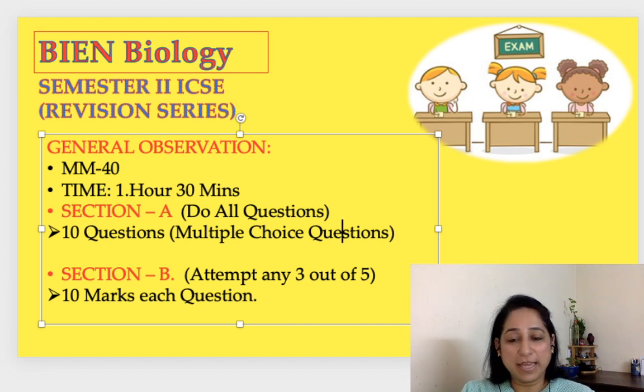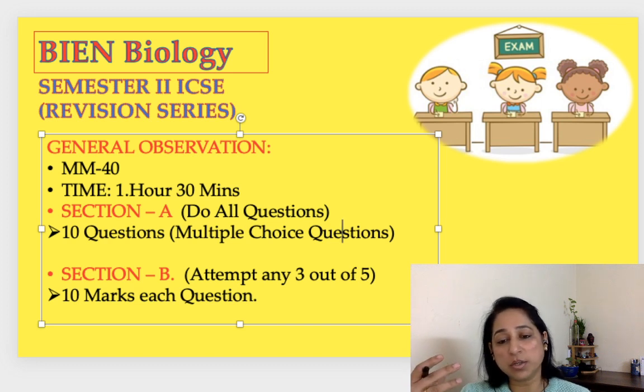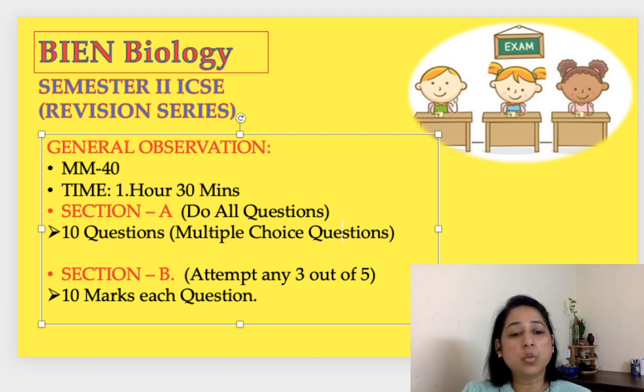Section B: attempt any three questions out of five. There'll be five questions given in section B, each 10 marks, and you have to attempt any three out of them.